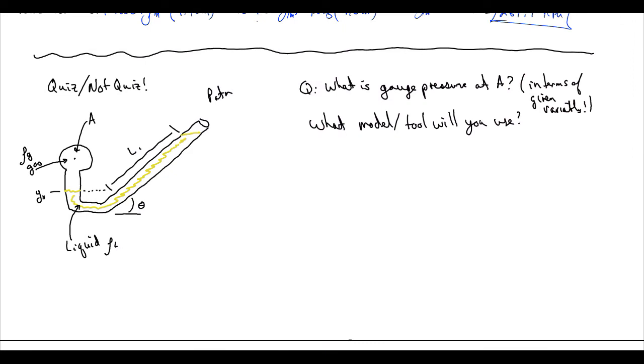So what is the gauge pressure at A in terms of the given variables? So we have our point A, we have Y1 it looks like. I'm not sure. We're going to call it Y1 here. We have a length going up at this angled tube, then the oil is going all the way up to here, and that tube is at an angle theta, and it has a density rho L.